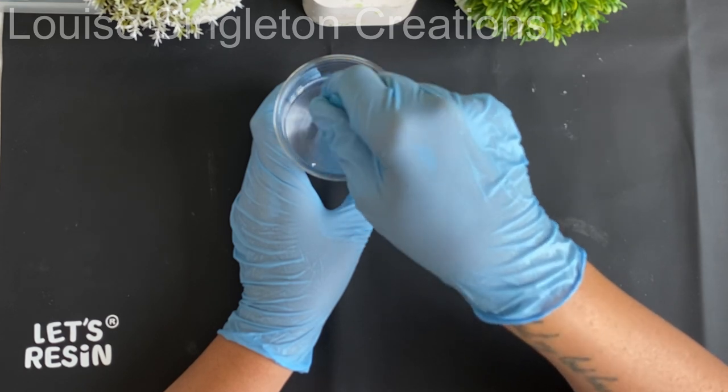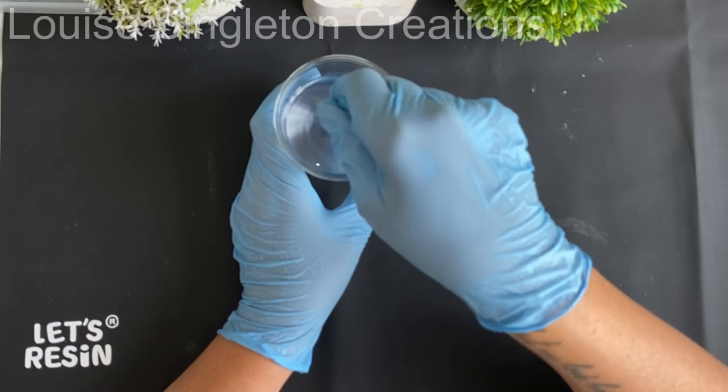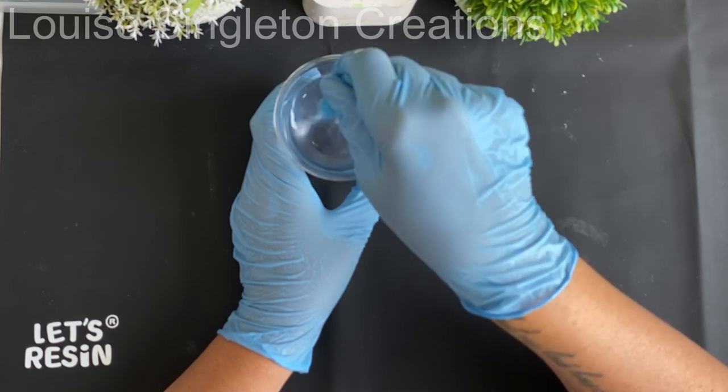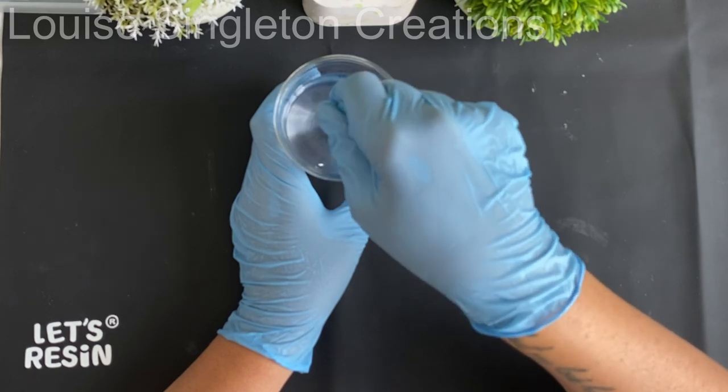After measuring equal amounts of part A and part B, I gave it a good slow stir for around two minutes until all the streakiness had gone and it was completely clear.